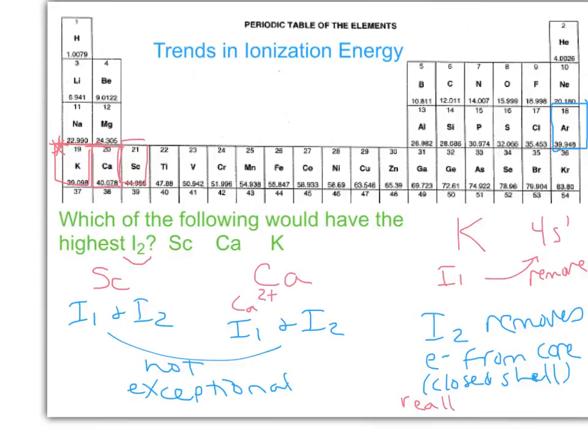So basically this is the strategy whenever you're looking for which is the highest, whether it's I2, I3, anything like that. Look for the element where you're taking an electron from the closed shell, from a noble gas configuration.